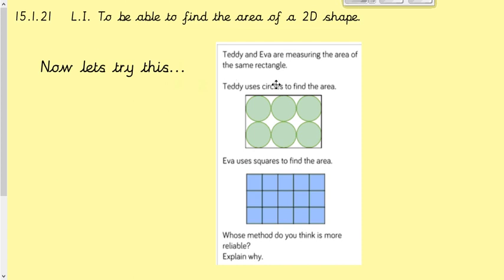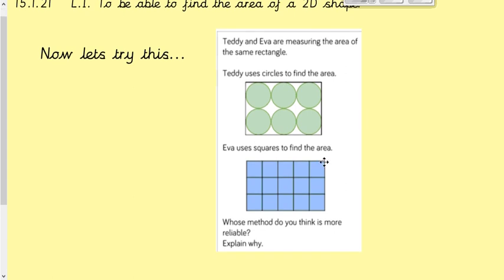Let's look at this. Teddy and Eva are measuring the area of the same rectangle. Teddy uses circles to find the area; Eva uses squares to find the area. Which method do you think is more reliable? Reliable means that you can trust it more and are more likely to get an accurate answer. Pause the video, have a quick think — which is more reliable, using squares or using circles? Have a look at the picture and see what you think.